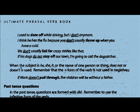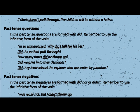If his dogs do not stay off our lawn, I'm going to call the dog catcher. When the subject is he, she, or it, or the name of one person or thing, does not or doesn't is used. For example: if Mark doesn't pull through, five children will be without a father. We use doesn't because the word Mark refers to one person.